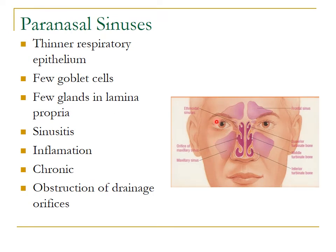The paranasal air sinuses include the two frontal air sinuses, the two maxillary air sinuses, and the ethmoidal air sinuses. They help in phonation of the voice and make the skull lighter. They are lined by respiratory epithelium, but this epithelium is thinner compared to the rest of the tract, with fewer goblet cells and fewer glands in the lamina propria. Inflammation of these sinuses results in sinusitis, and chronic obstruction can lead to blockage of their drainage orifices, which open into the middle meatuses of the nose.